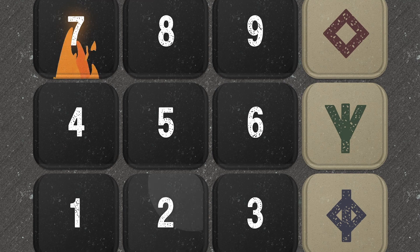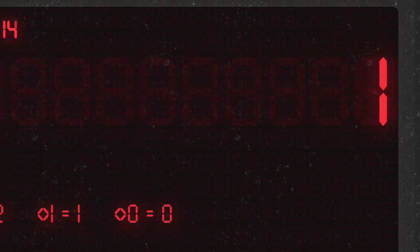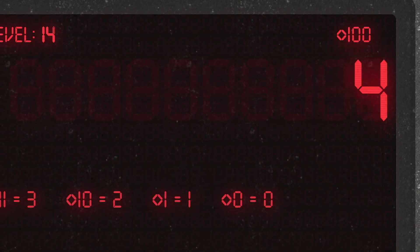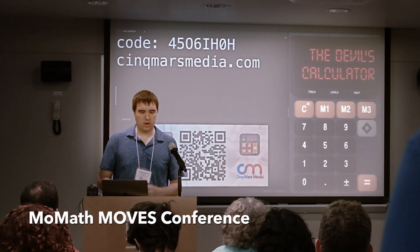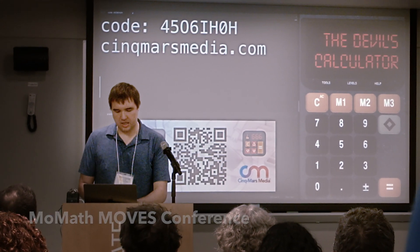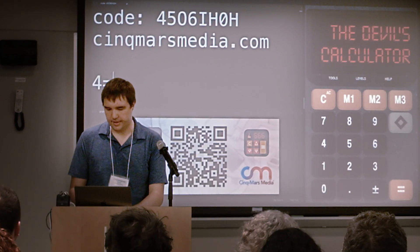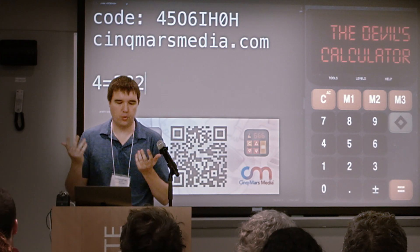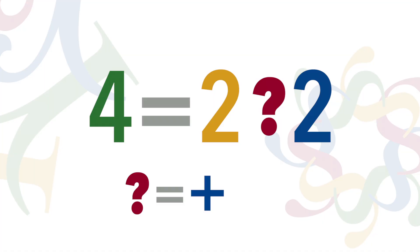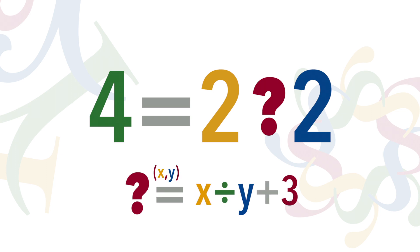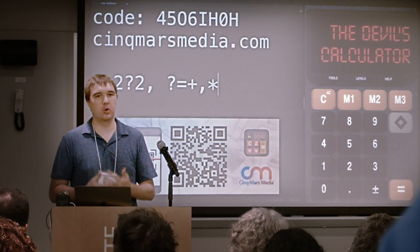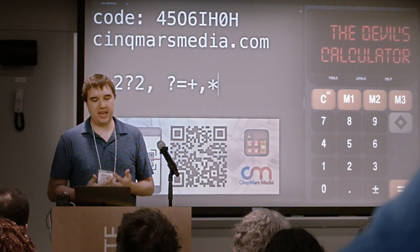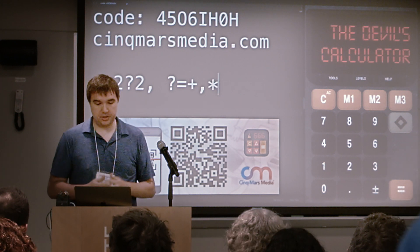The premise of the game is really very simple. We're all familiar with solving for x in an algebraic expression. But rather than solving for numerical constants, you're instead solving for the operators themselves. So for example, 4 equals 2 question mark 2. The operator could represent addition, multiplication, or something else entirely — something completely invented to obfuscate the correct answer. We really don't know until we collect more data points. That makes this, at its core, a game of interpolation.